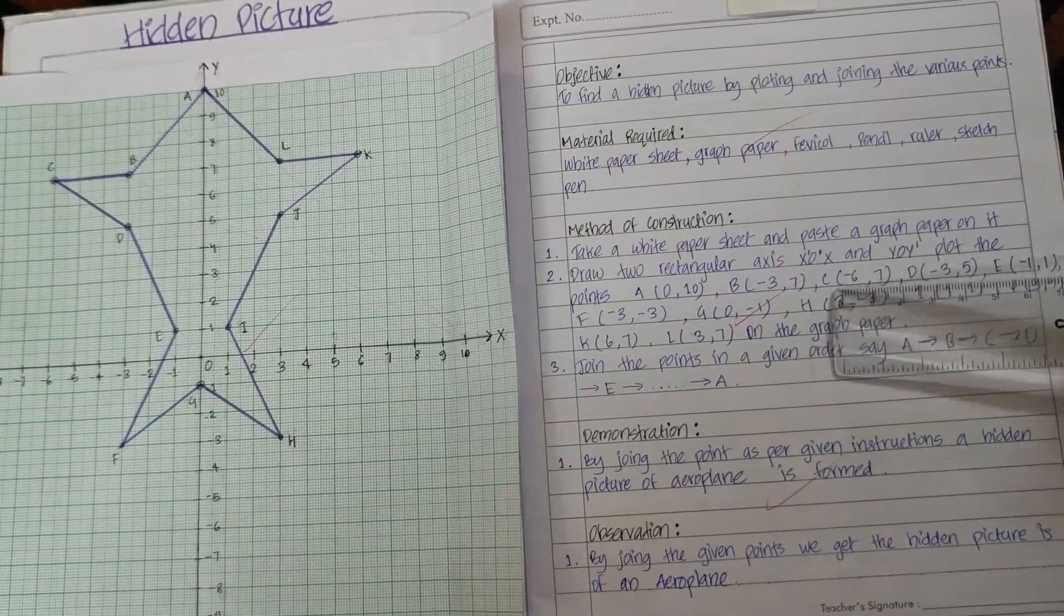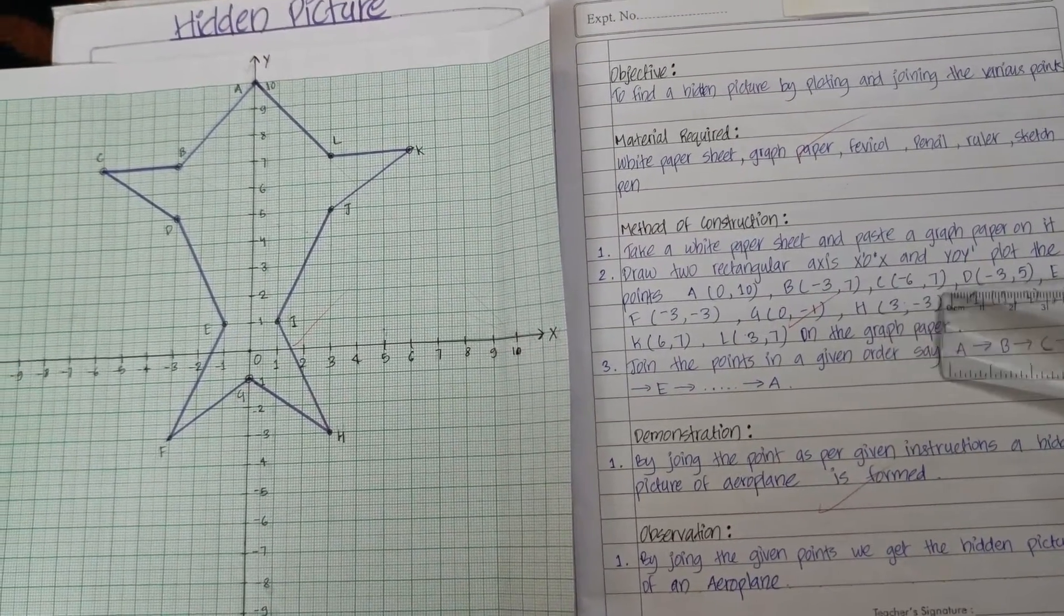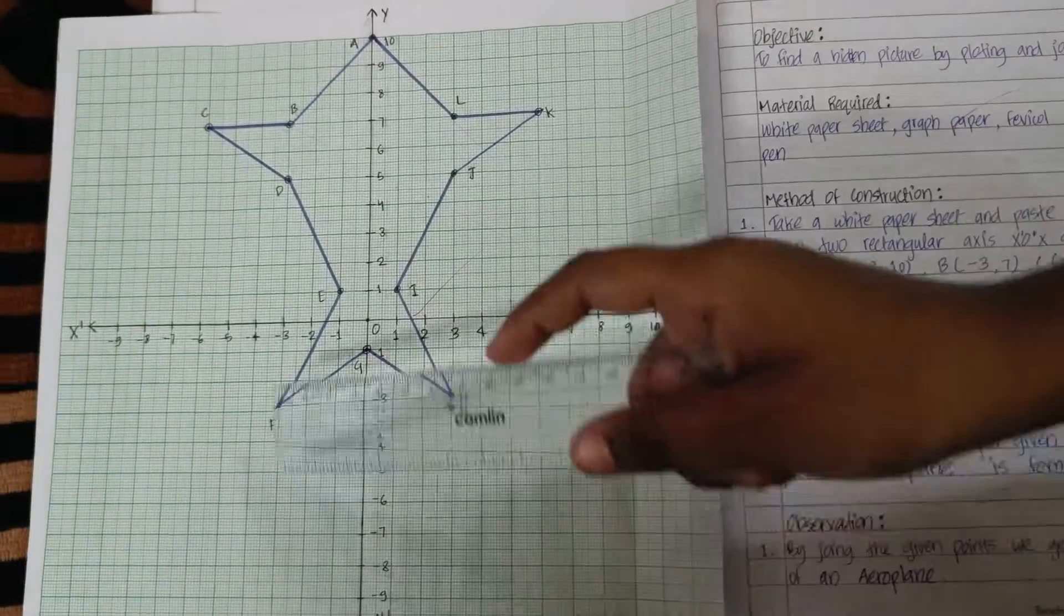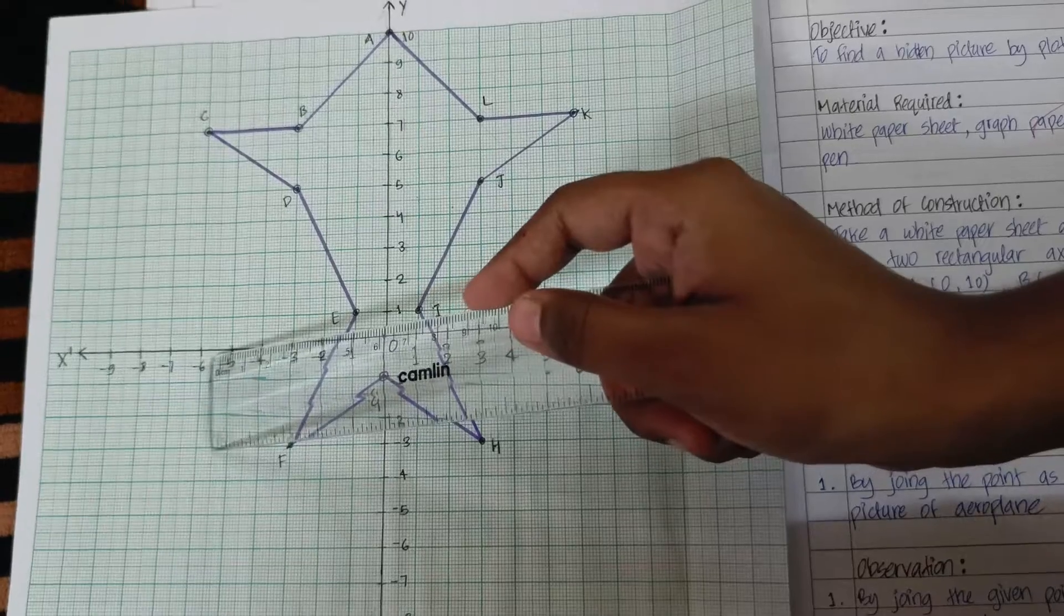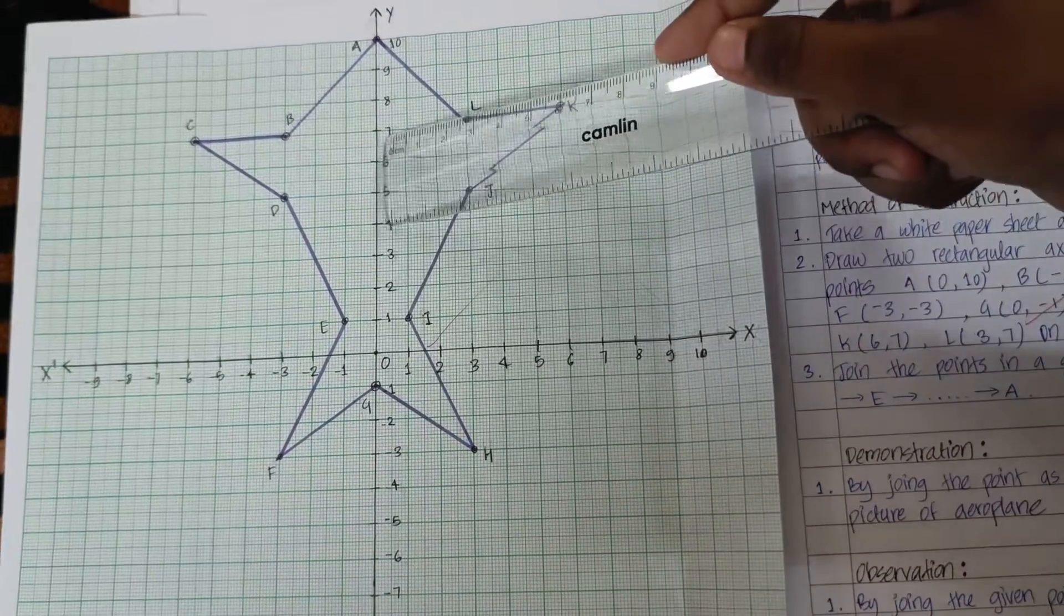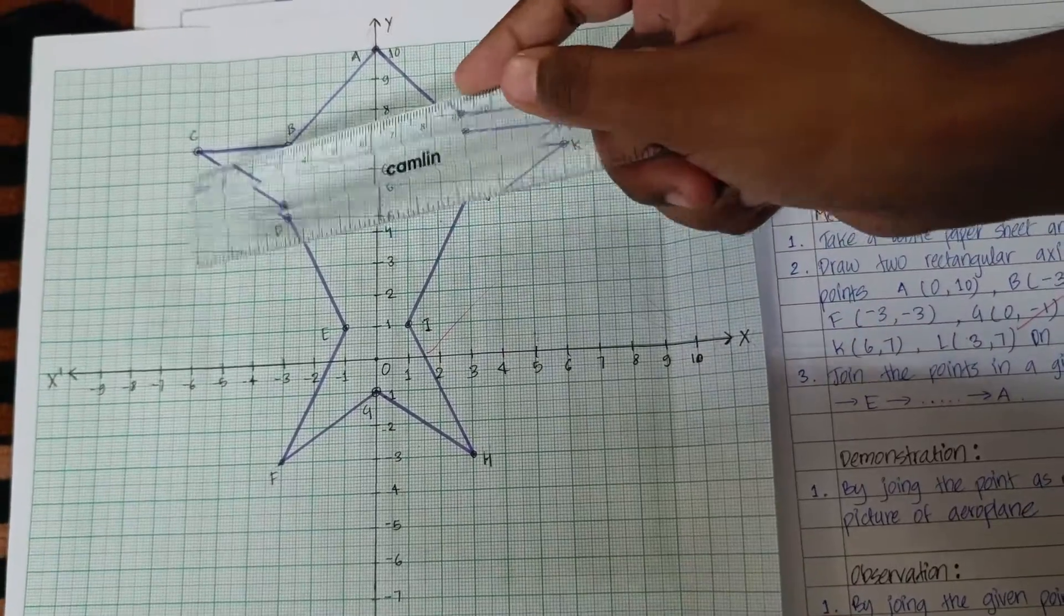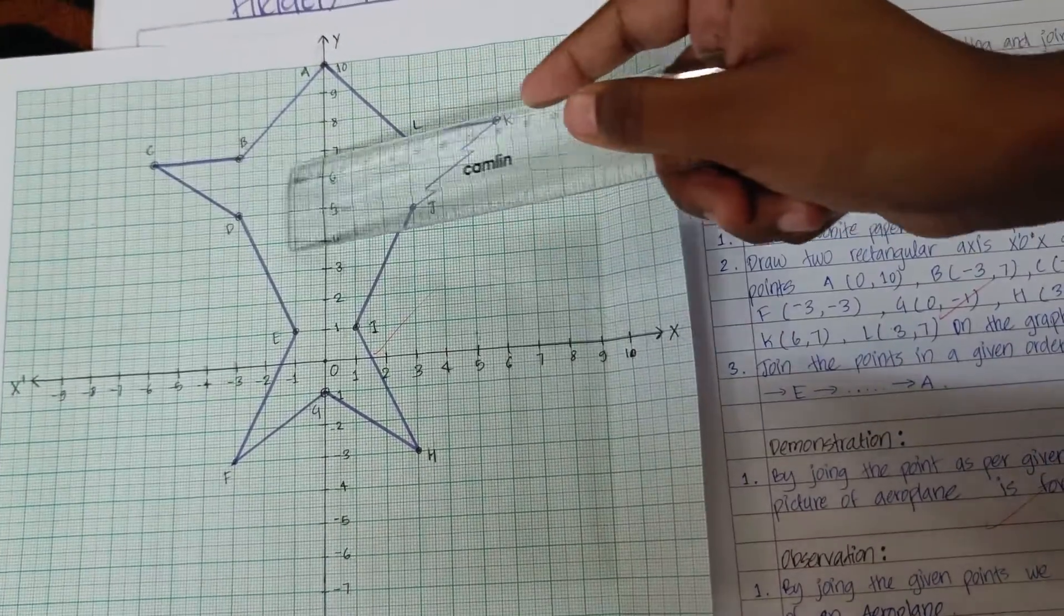Now, we will plot point C which has (-6,7) coordinates. So negative direction from the x-axis -6 and then positive direction from the y-axis 7. Hence we have the point C as (-6,7).